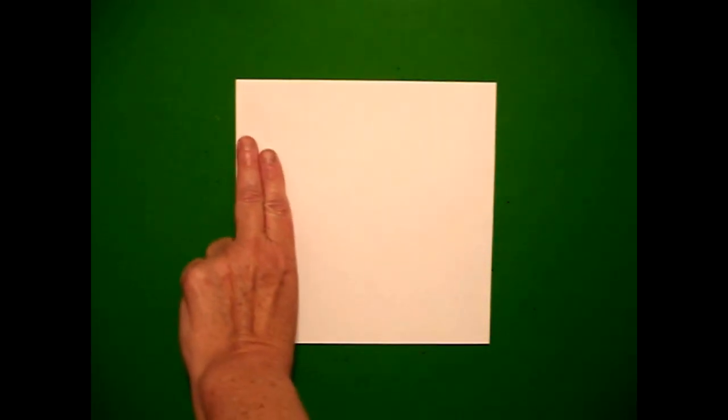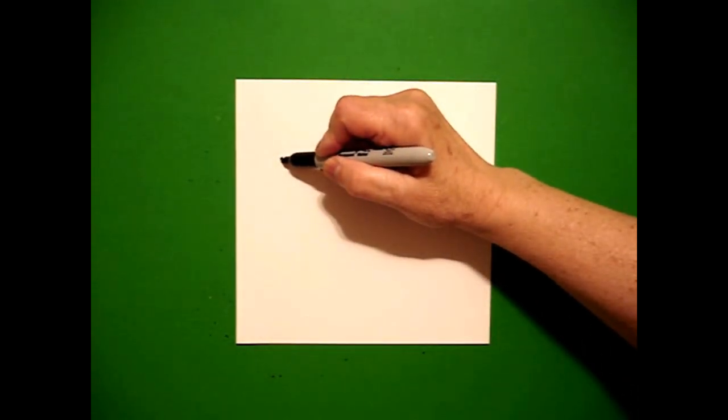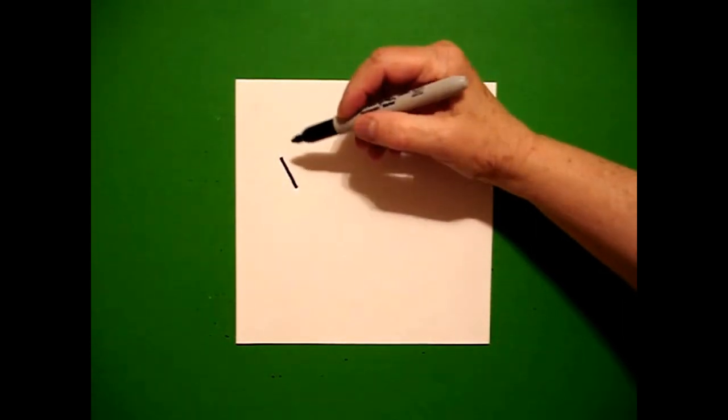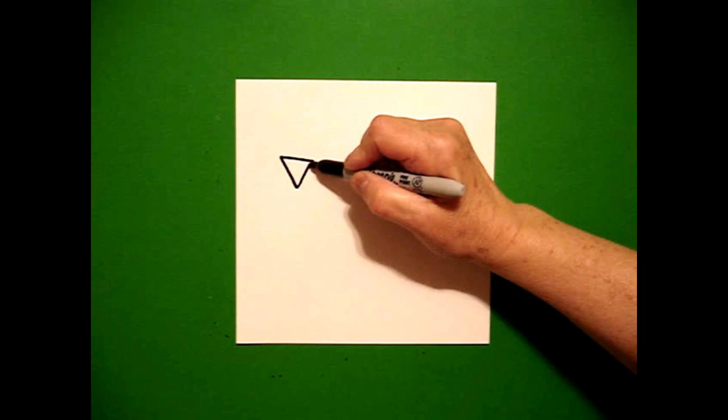I take two fingers on the left and I put a dot. And from that dot, I'm going to draw a triangle. Straight diagonal down, straight diagonal over, straight line connect.